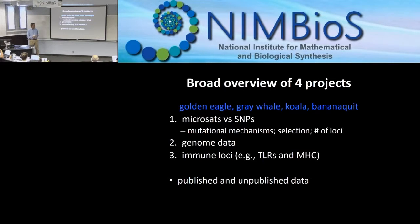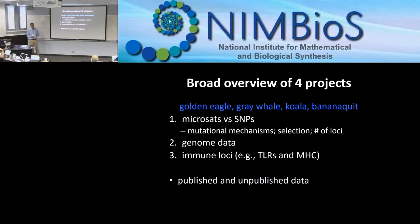I might talk a little bit about microsatellites, but mostly about SNPs. As it turns out, a lot of the theoretical underpinnings of our analyses for SNPs are based to some degree on microsatellites. There are important biological differences in terms of mutational mechanisms, modes of selection, and the number of loci surveyed. I'll also talk about some genome data and data on immune loci and how these relate to conservation genetics.